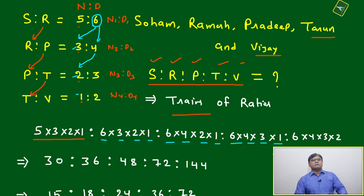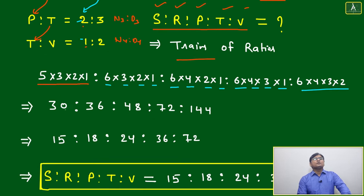Then you will get the five individual ratios. Just multiply: 5×3×2=30, 6×3=36, 6×4=48, 6×4×3=72, 6×4×3×2=144. Taking easier common factor, we can write 15:18:24:36:72.